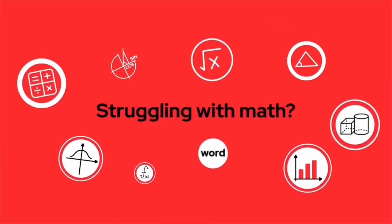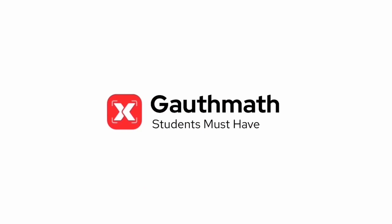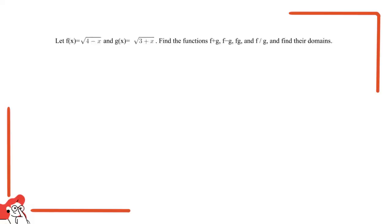Welcome to the Goth Math class. Let's make math so easy. Hello everyone, I'm your teacher. For this question, let f(x) equal square root of 4 minus x and g(x) equal square root of 3 plus x. Find the functions f plus g, f minus g, f times g, and f divided by g, and find their domains.